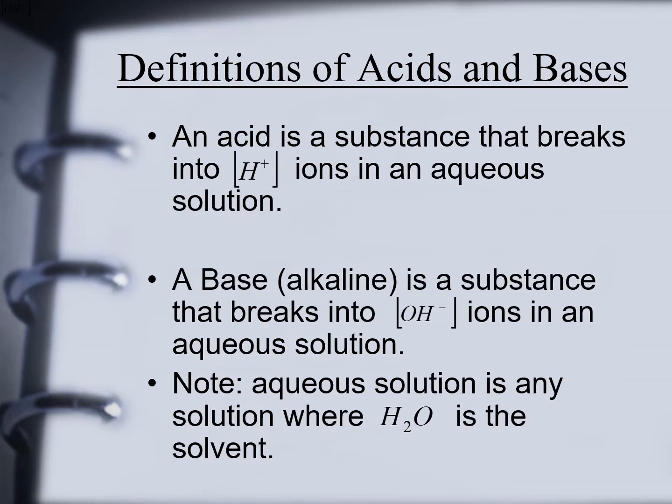Definitions: an acid is a substance that breaks into hydrogen ions in an aqueous solution. A base, also called alkaline, is a substance that breaks into hydroxide ions in an aqueous solution. Take note: an aqueous solution is a solution where water is the solvent.